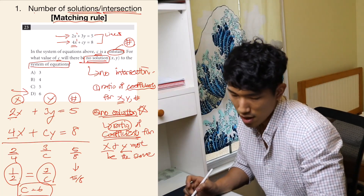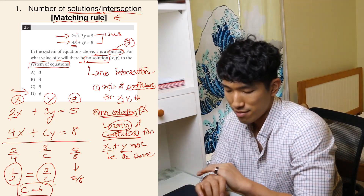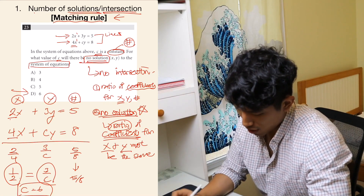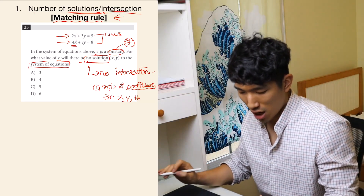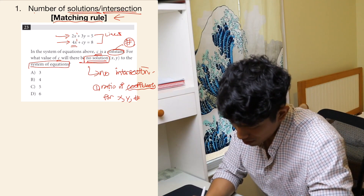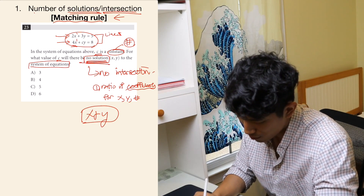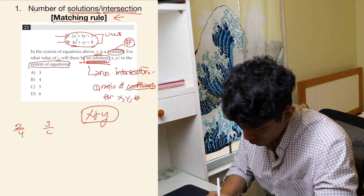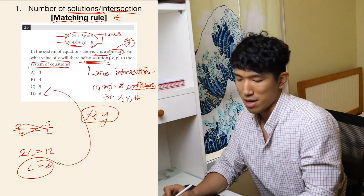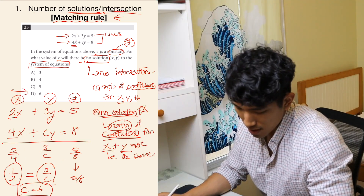The answer is 6. The matching rule might look complicated at first, but once you have it down it's very fast. In practice: two equations, no solution means x and y coefficient ratios must match. Find the ratio for x — 2 over 4 — and for y — 3 over c — set them equal, cross-multiply: 2c equals 12, so c equals 6. Quick and efficient once you know the method.